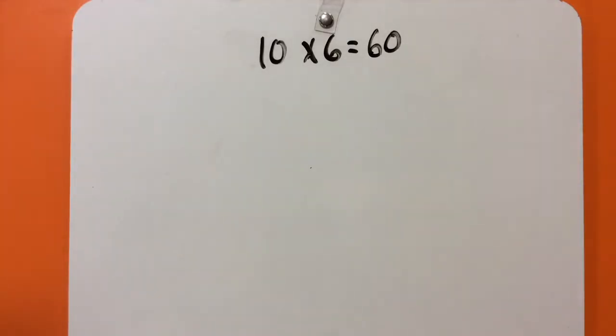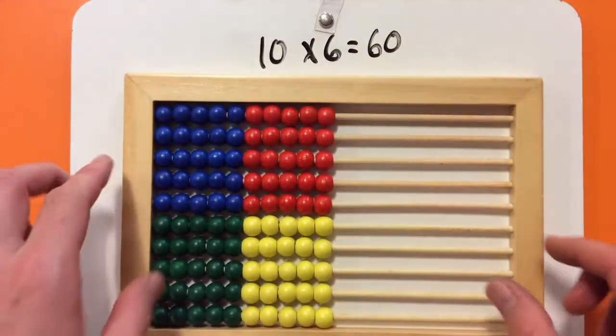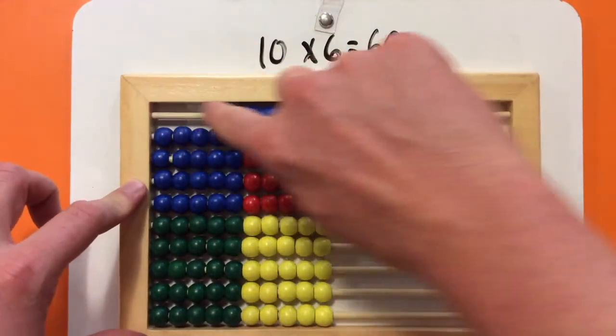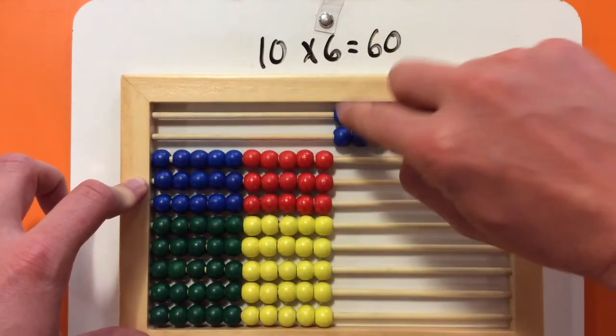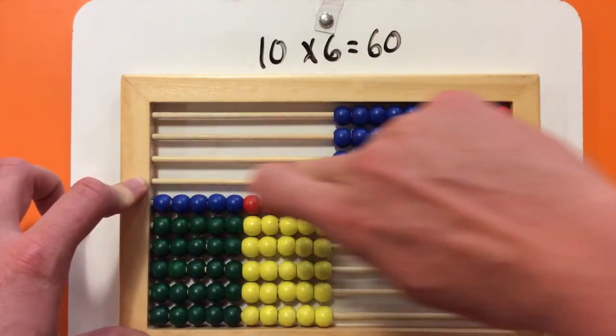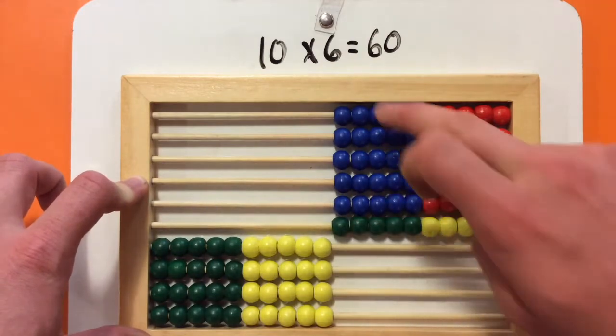let's check that with the abacus to start. So, we've got each row is 10. So, I've got 10, 20, 30, 40, 50, 60.